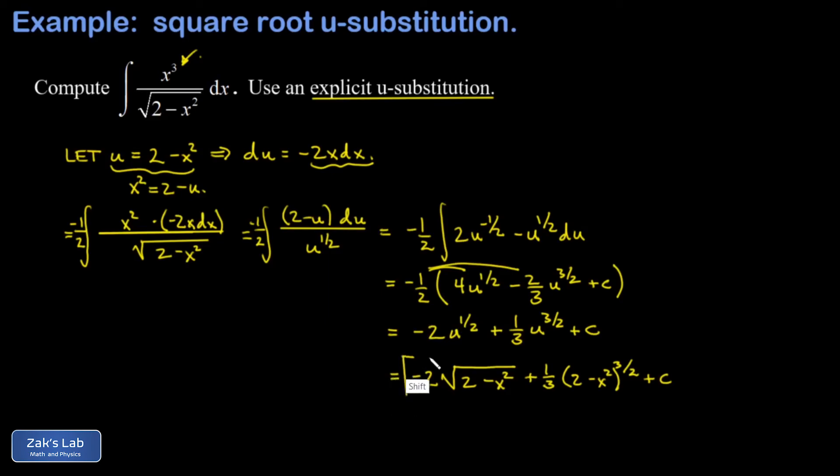Now there are ways you can manipulate this solution. I could factor a square root of 2 minus x squared out of both of those terms. But the way the answer is at this point is acceptable, and we're done.